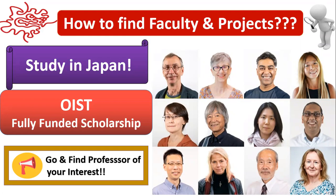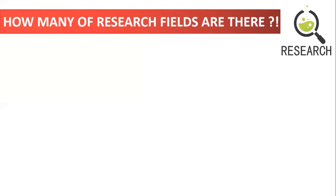I divided this video into two parts. In the first part I will explain how many research fields are available in OIST, and in the second part I will tell you how you can find the vacant position in a particular professor's lab. So let's start the first part — discussing the research fields and their related units.